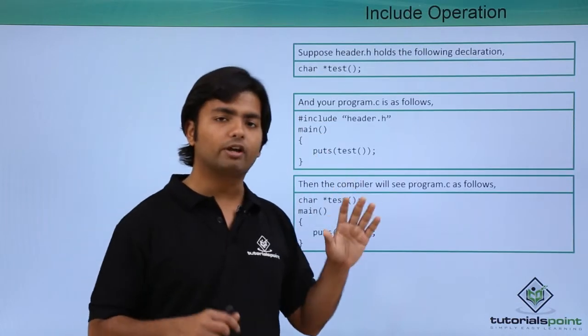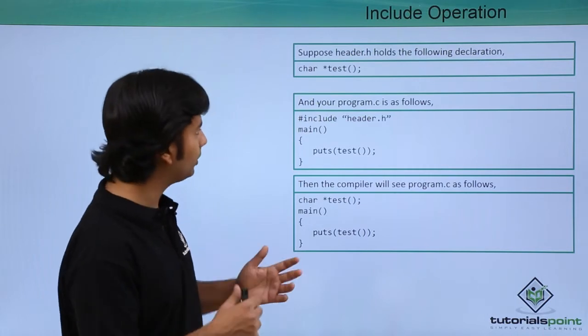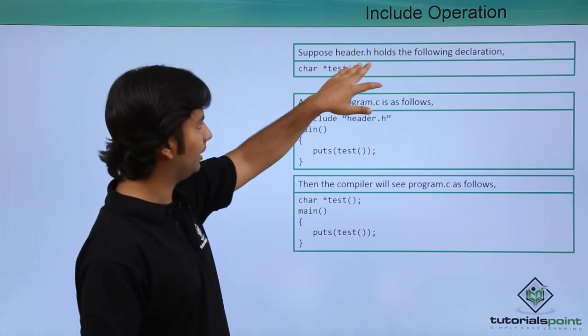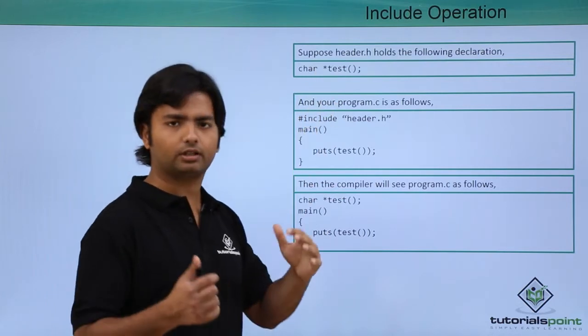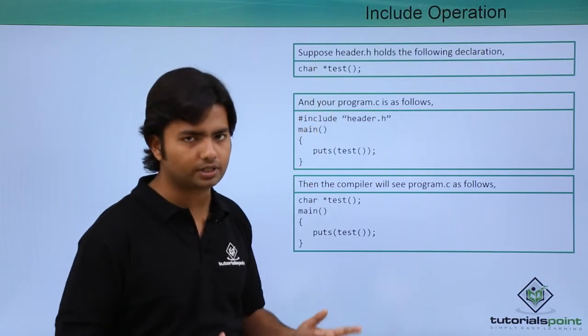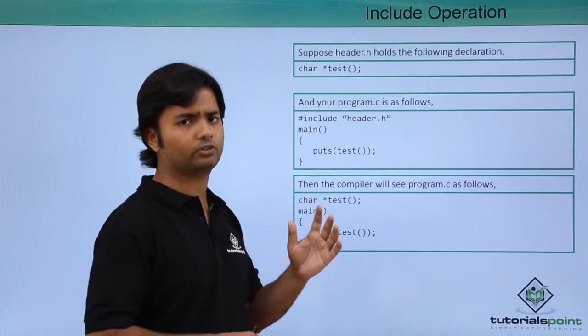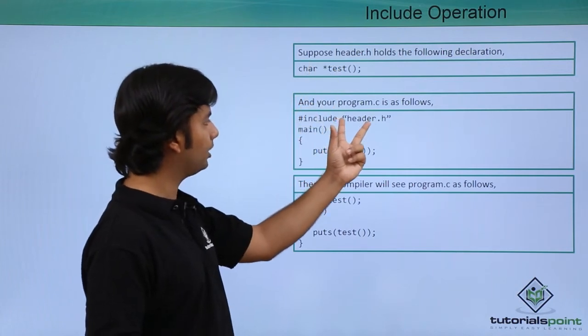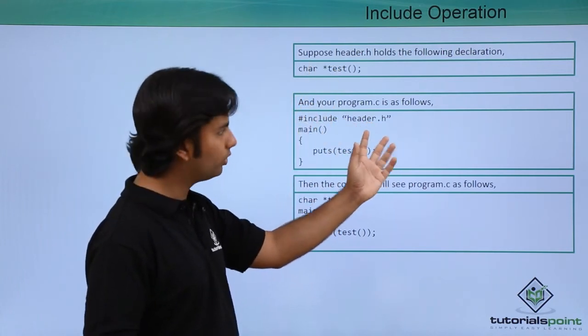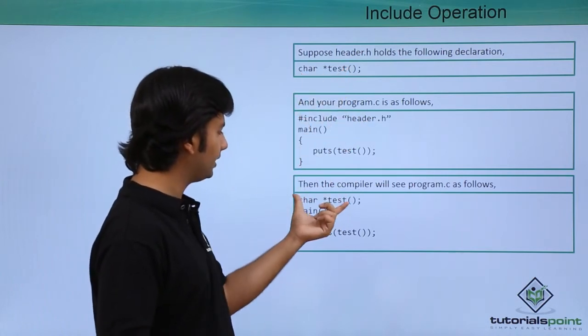Once you have added that header file and you compile, let's see what will happen. Suppose header.h holds a prototype. As I said, header files contain nothing but the prototype of functions. This is a prototype, a declaration of a function. When you include header.h in the code, during compilation, this line will be replaced by this line.